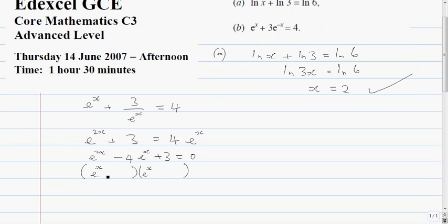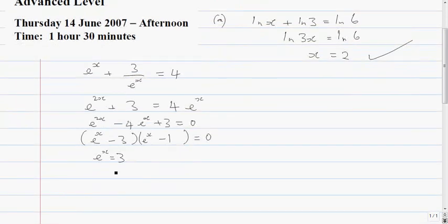E to the power x is equal to 3, and it must be minus 3 and minus 1 equals 0. So e to the power x is equal to 3, that's one possibility. Take logs, so x is equal to log 3. Or e to the power x equals 1, which means x is equal to 0.